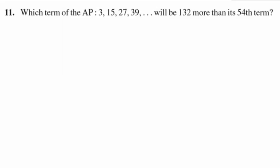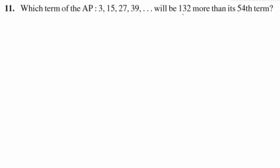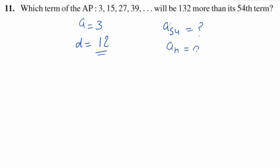The next question: Which term of the AP is 132 more than its 54th term? First find a and d from the AP — a equals 3 and d equals 12. Find the 54th term by substituting in the formula, then set the nth term equal to the 54th term plus 132 and solve for n. Thank you and have a nice day.